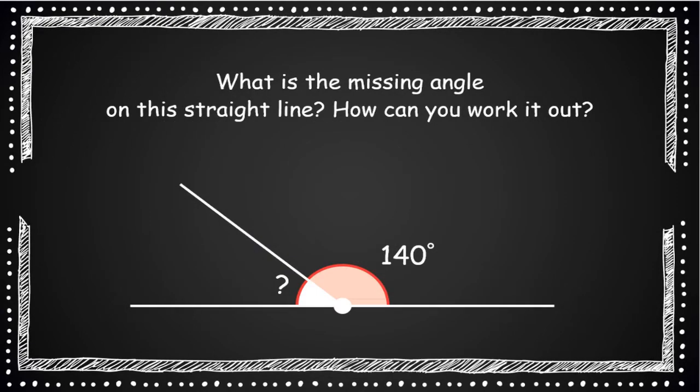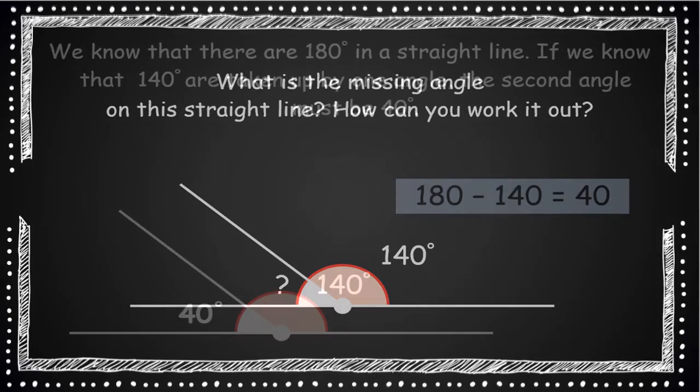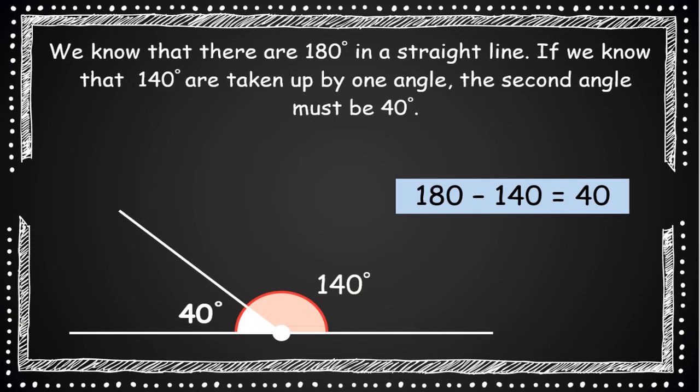Ok practice time, now that you know all that, have a look at this straight line. Can you work out what the missing angle is? Pause the video and write down an answer. So the answer you should have got is 40 degrees.